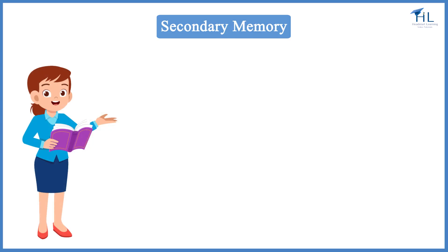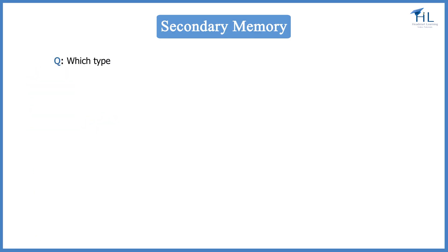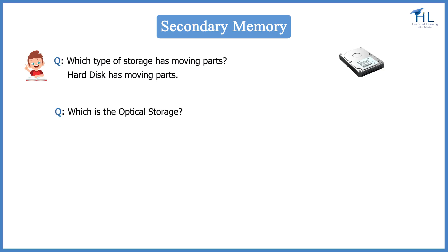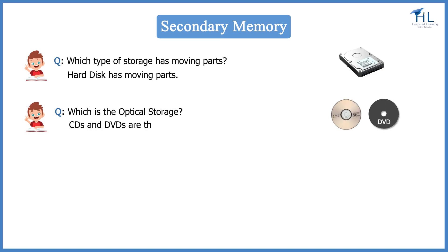Let us revise what we have just learned. Which type of storage has moving parts? The hard disk has moving parts. Which is the optical storage? CDs and DVDs are the optical storage.